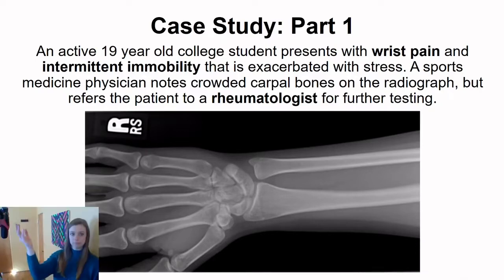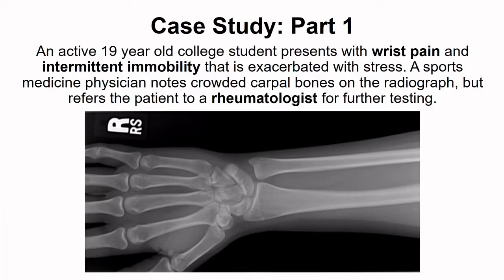Here you can see me flexing and extending my wrist. The patient visits a sports medicine physician who sees crowded carpals on the radiograph, which they think may contribute to some limited mobility of the joint. But they refer the patient to a rheumatologist for further testing.